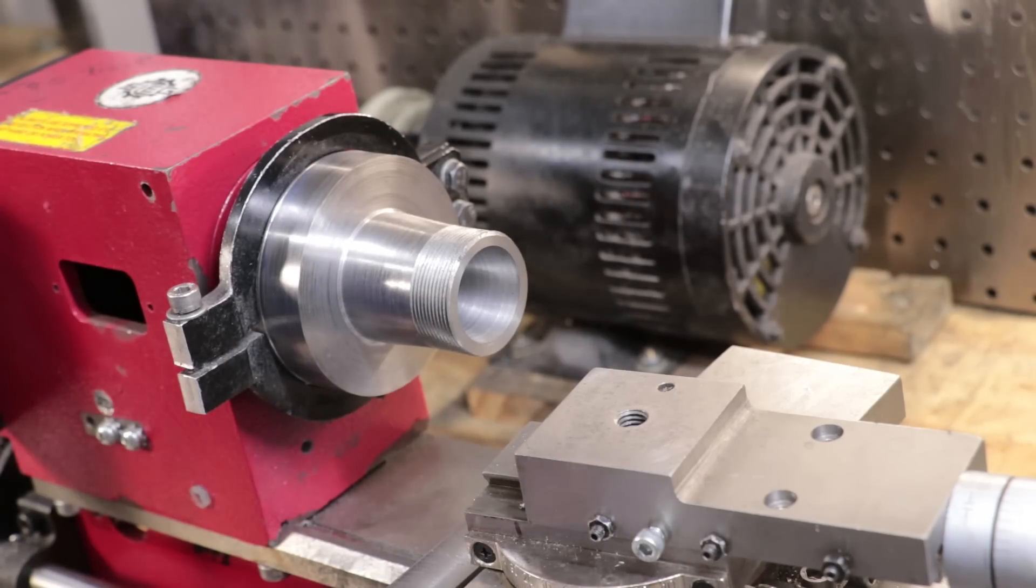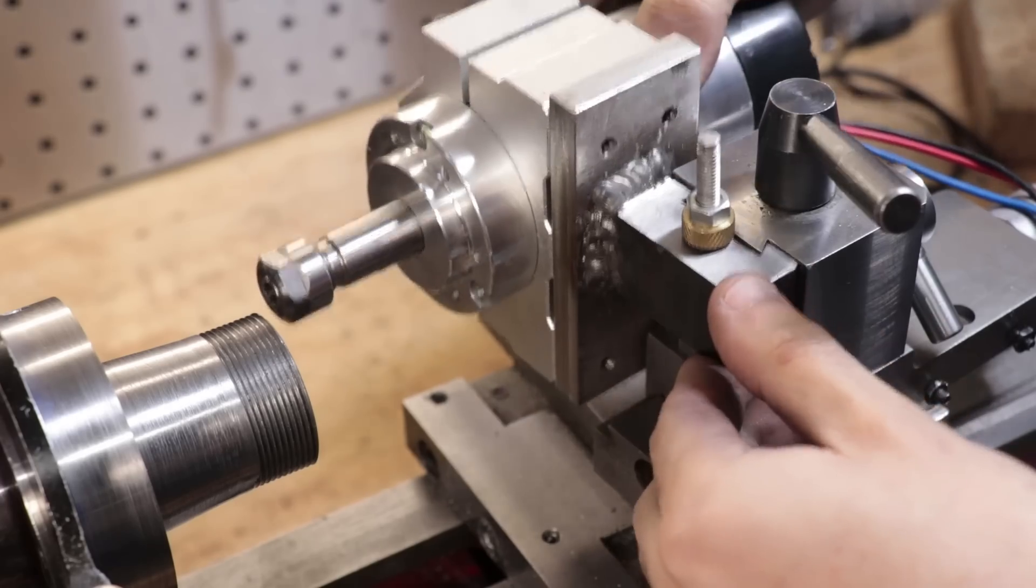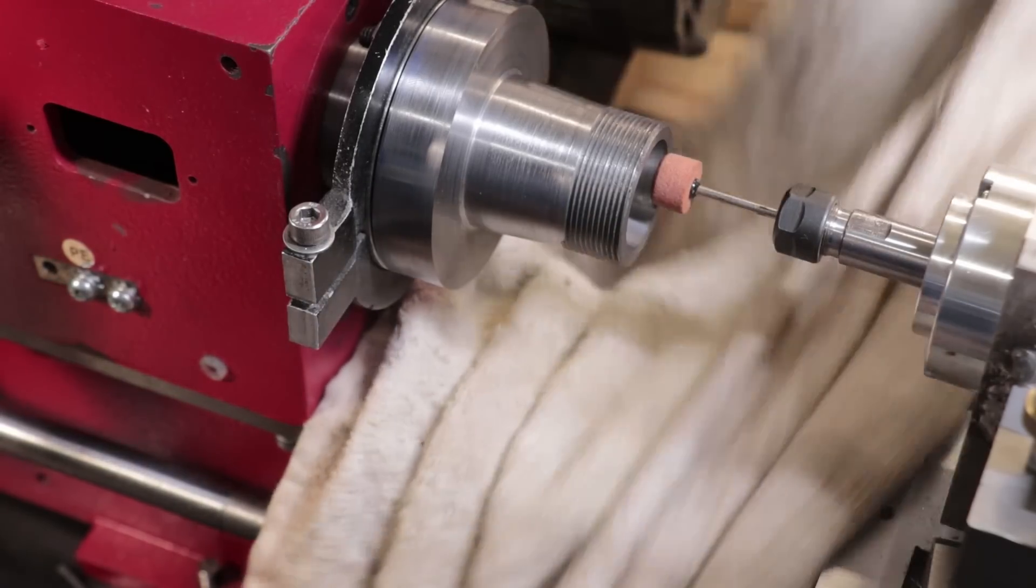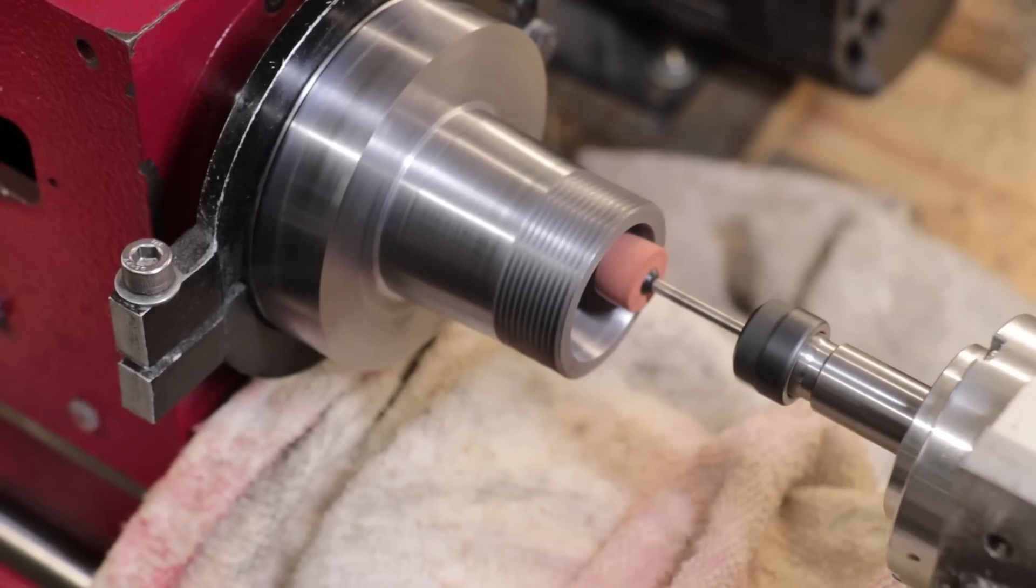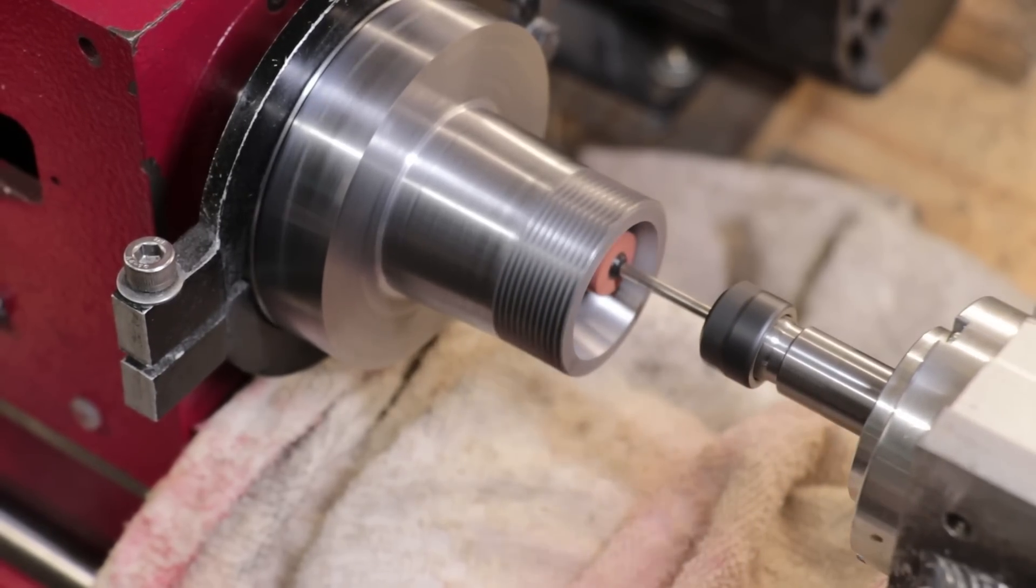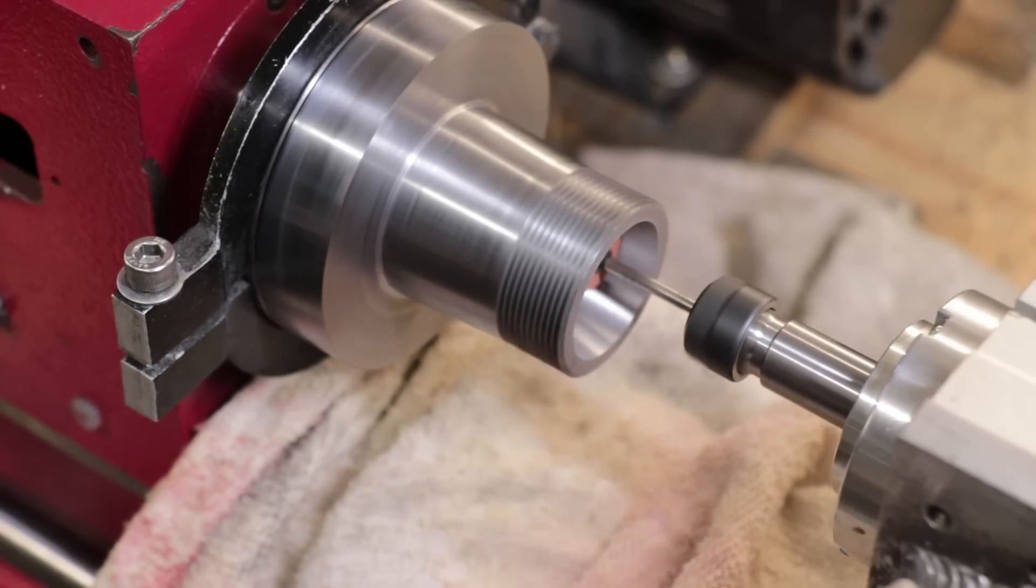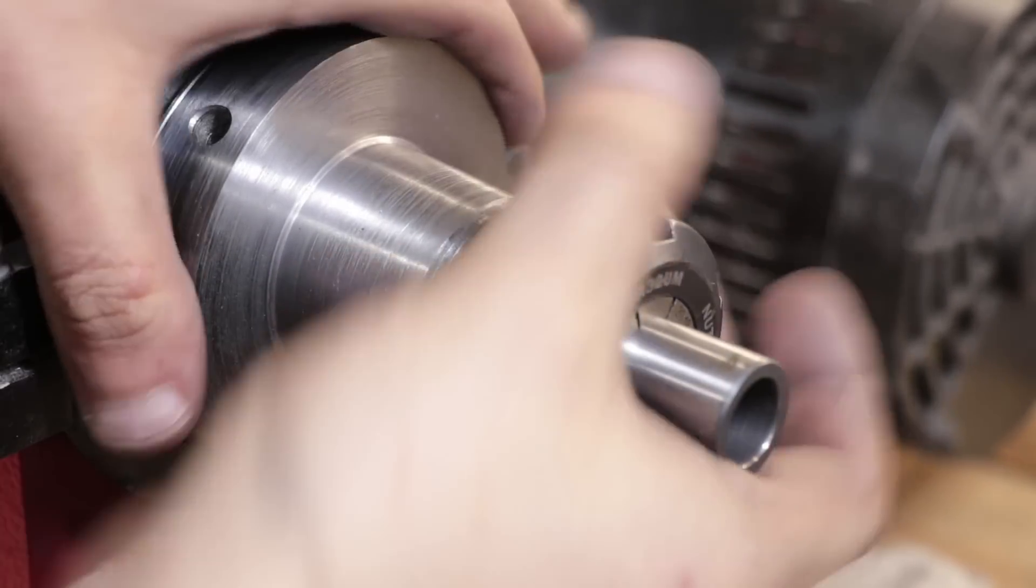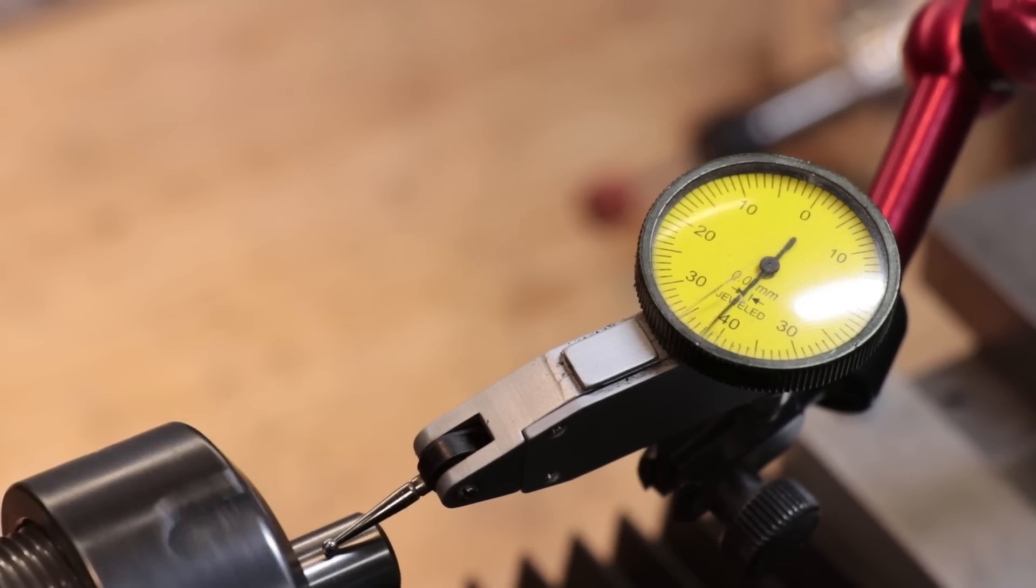I'm not going to get any better results with the boring bar, so what I'll do is set up my tool post grinder. Now the tool post grinder is definitely a work in progress, but it should give us some better results. And that is a much better finish. And the run-out has dropped to about 20 microns, which is a big improvement from before. Now I will give it another grind with a better grinding disc and some coolant, but before I do that, I'll give it a quick clean-up to get rid of some of the machining marks.